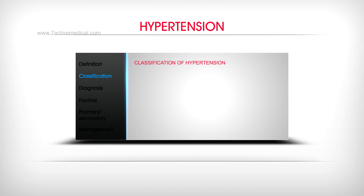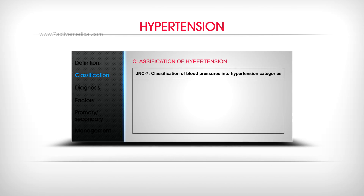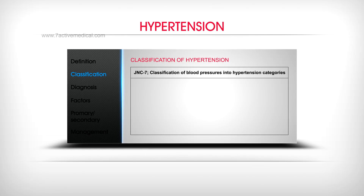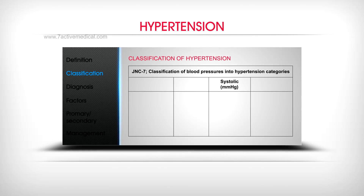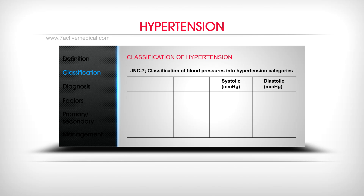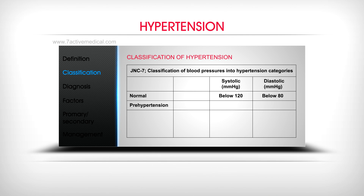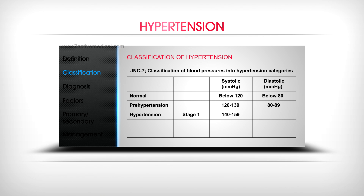According to the JNC 7 classification of blood pressures: Normal is below 120 systolic and below 80 diastolic. Prehypertension is 120–139 systolic and 80–89 diastolic. Hypertension Stage 1 is 140–159 systolic and 90–99 diastolic. Stage 2 is 160 and above systolic and 100 and above diastolic.